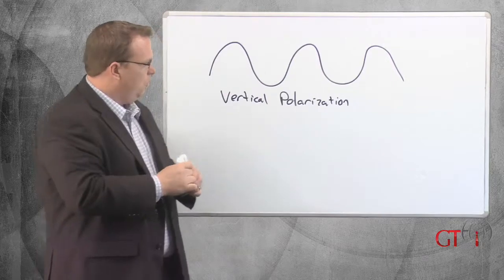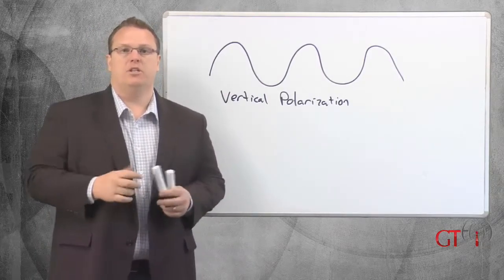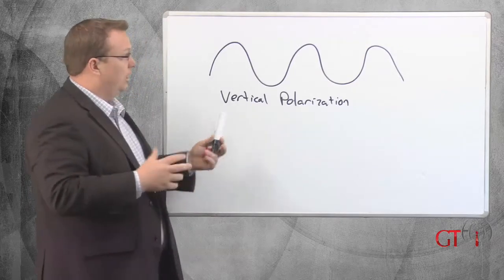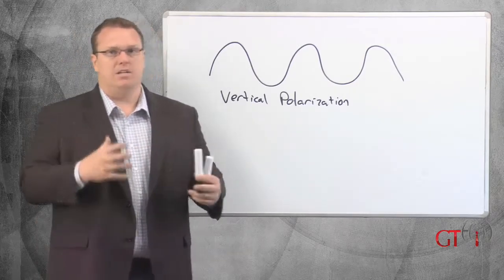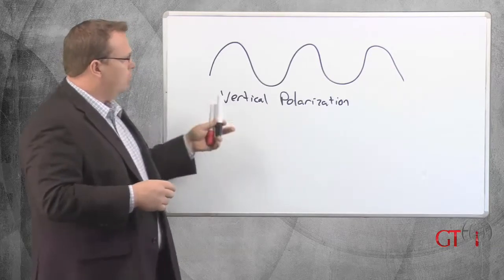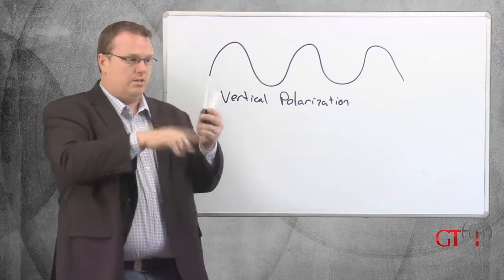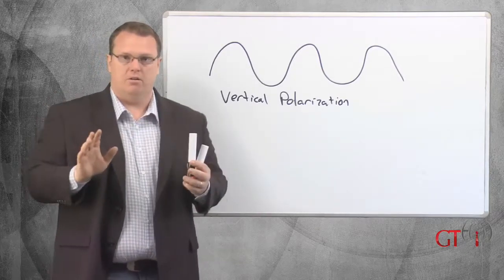Now you hear the word polarization and polarity interchanged a lot, but that's actually not correct. Polarity is referring to like positive and negative. Polarization is the right word to use. Vertical polarization, the waves go up and down. They come out of an antenna. Say this is an antenna, it comes out up and down. Pretty standard.